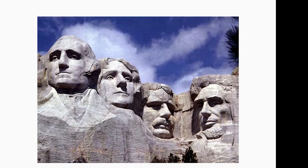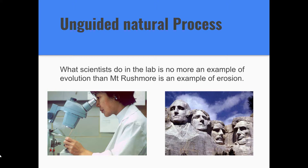What scientists do in the lab is no more an example of evolution than Mount Rushmore is an example of erosion. Erosion is a natural process — it's what happens when nature, left to nature, has lots of time to work. Erosion is never going to create Mount Rushmore. Similarly, when scientists work with cells or DNA in the lab, they're learning about chemical structure, not what happens when DNA is left to itself in nature. Evolution is intended to be an unguided natural process, not a toolbox that God used in the creation story. It's meant to be an alternative to intelligent design and miraculous creation.